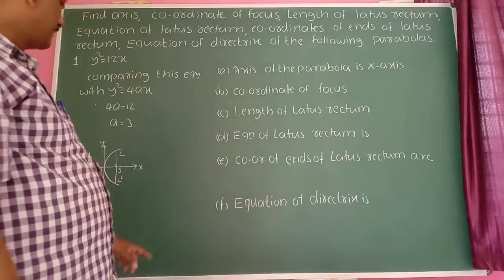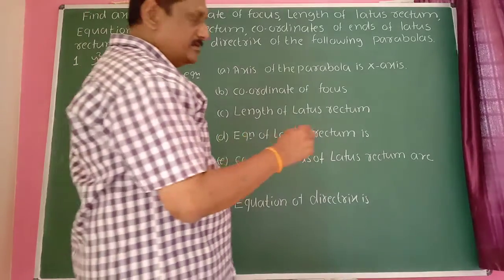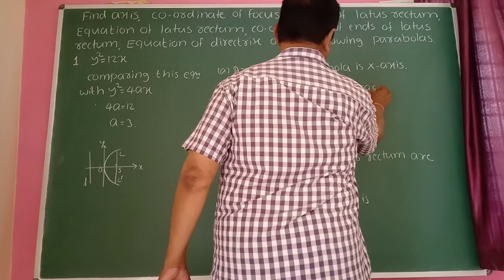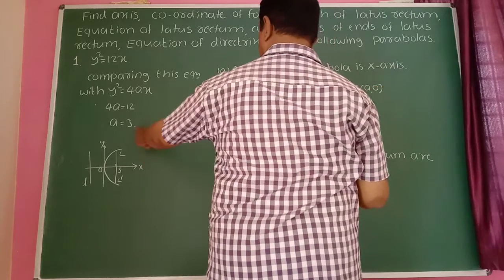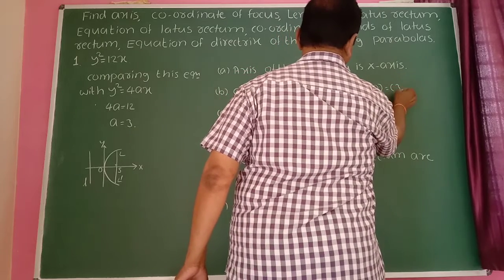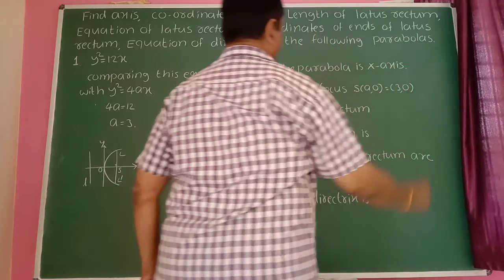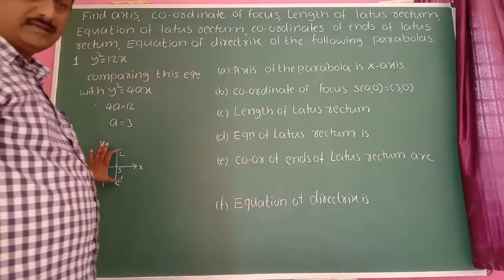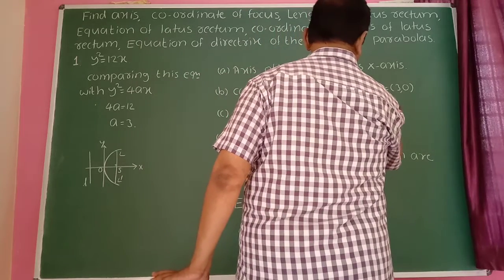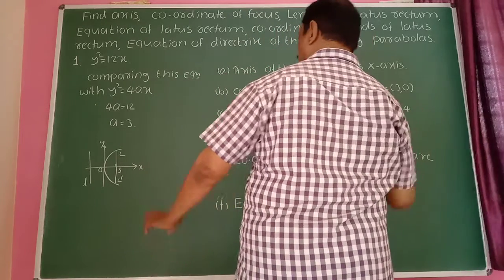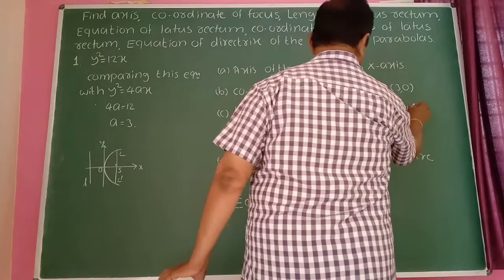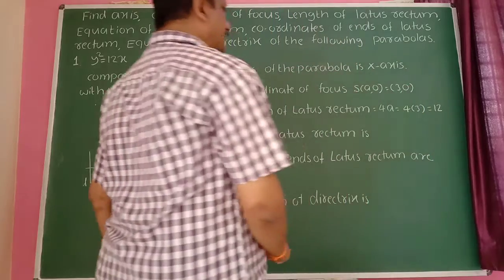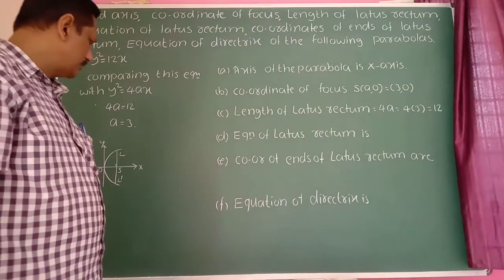The coordinates of the focus: since the focus lies on the x-axis, it is at (a, 0). Since a = 3, the focus is at (3, 0). The length of the latus rectum is always 4a, so 4 × 3 = 12. Length is always positive, so the length of the latus rectum is 12.